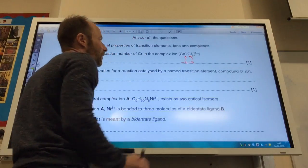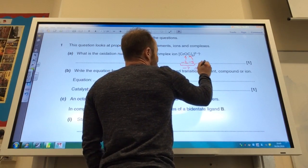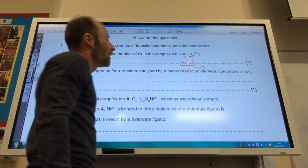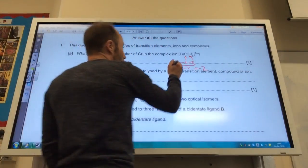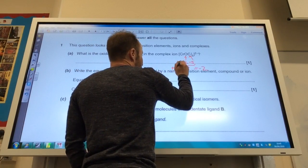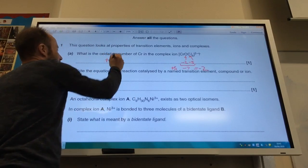So overall, I've got a total of minus 7. The complex has an overall charge of minus 2, and therefore chromium must be plus 5, because 5 minus 7 is minus 2. So the answer there is plus 5.